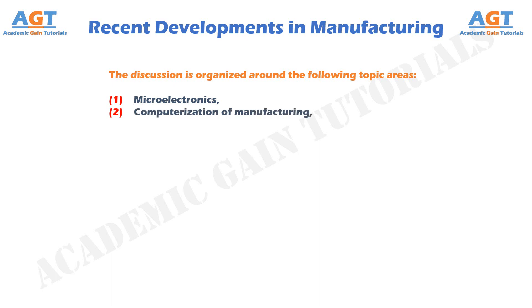Computerization of manufacturing: The first digital computers date from the mid-1940s, but their applications in manufacturing came quite a few years later. In the mid-1960s, direct numerical control was developed, in which mainframe computers were employed to remotely control machine tools in factories.